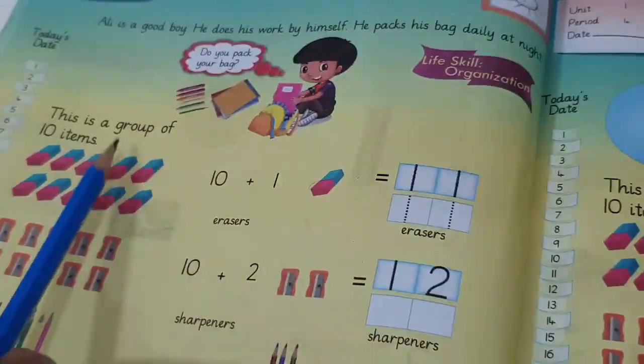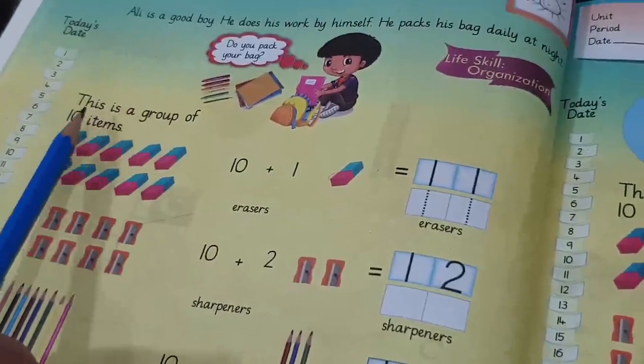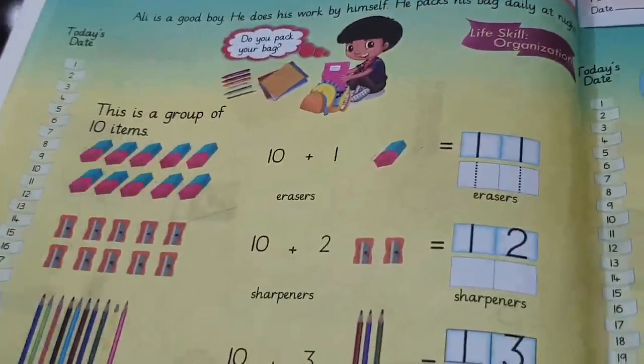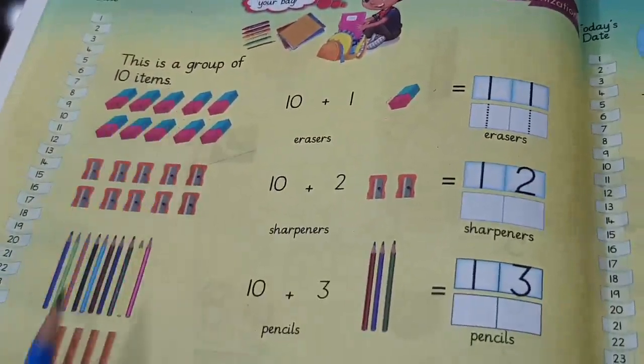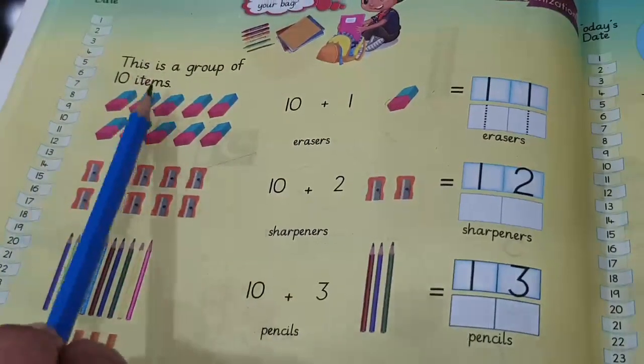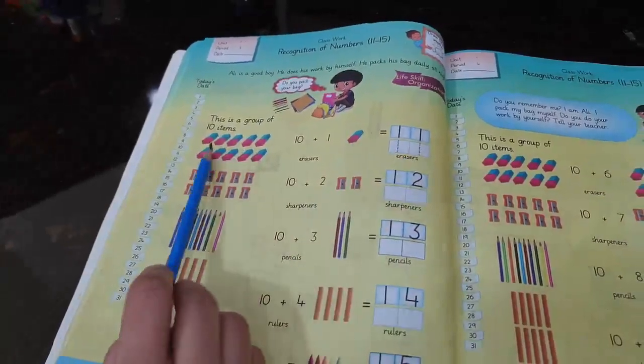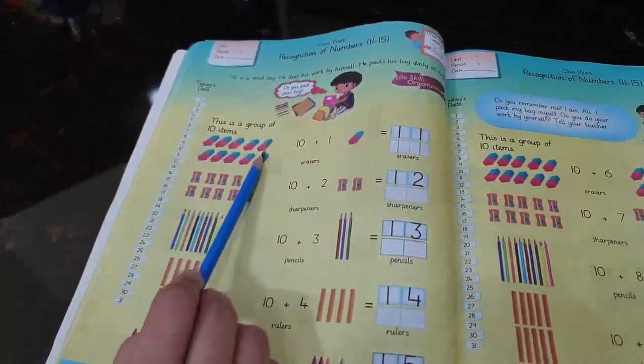Now moving to the lesson, what we have to do is, let's read here. This is a group of 10 items. Okay, beta. All these things mentioned here are of number 10, a group of 10. So, what we have to do, we have to count these first.